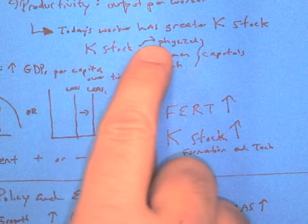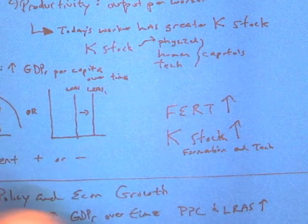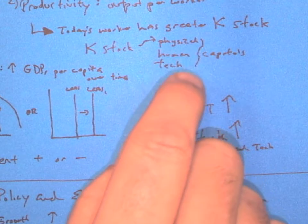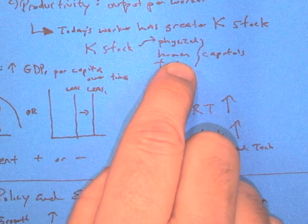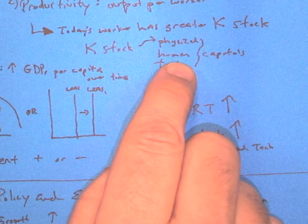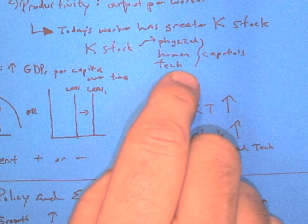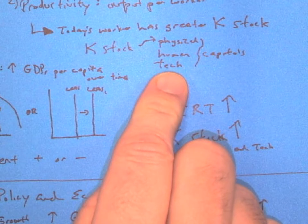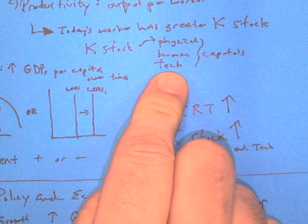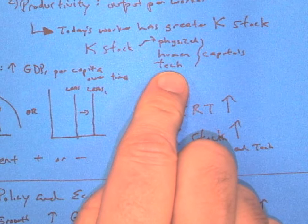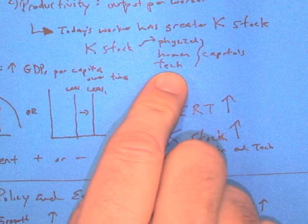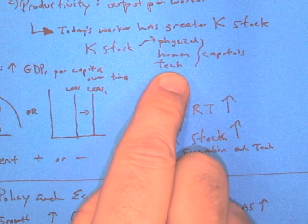So if today's worker has greater capital stock, then that means we can improve their physical capital, which is tools, machines. Human capital is going to be our investment into education, into job training, into health care, whatever can make our workforce stronger and more productive. Technology is going to be things like giving them better tools, showing them how to use those tools in a better way, even tools that are more improved, like the use of Promethean boards in the classroom, whatever it is that makes us more productive.